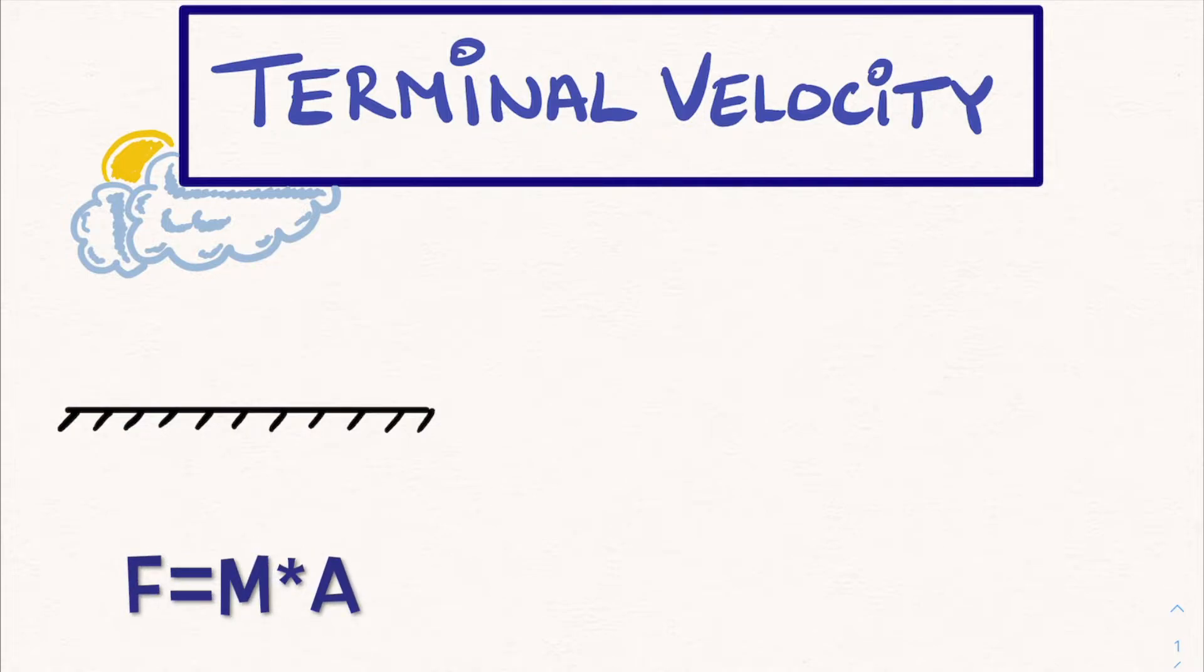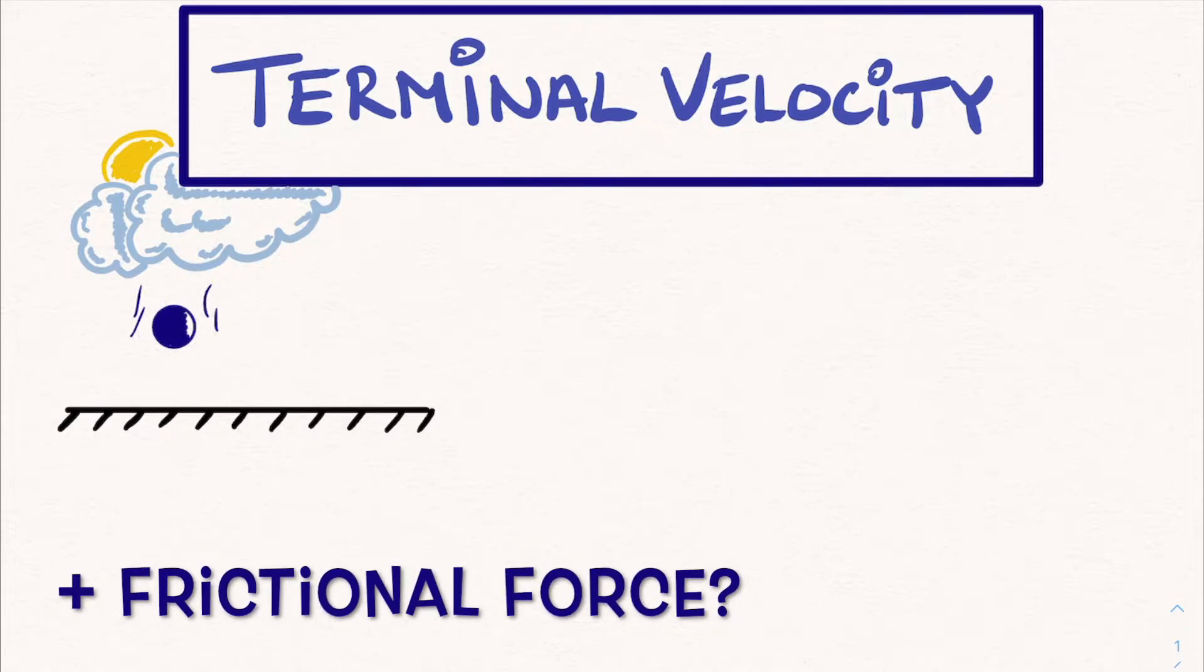We all know that falling objects in a gravitational field do so in an accelerated fashion. Their velocity increases because the force of gravity continuously pulls them towards the ground, and a constant force equals acceleration.